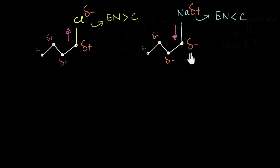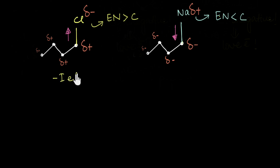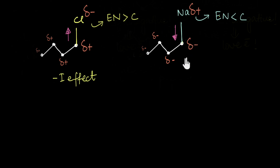A less electronegative element pushes electrons towards the carbon chain, thereby inducing a partial negative charge throughout it. When a group pulls electrons away from the carbon chain — our system — it reduces the electron density. This is called the minus-I effect. On the other hand, if something pushes electrons into the system, it increases the electron density, and this is called the plus-I effect. So inductive effect can work both ways: minus-I as well as plus-I.